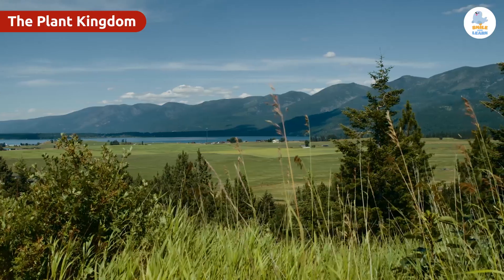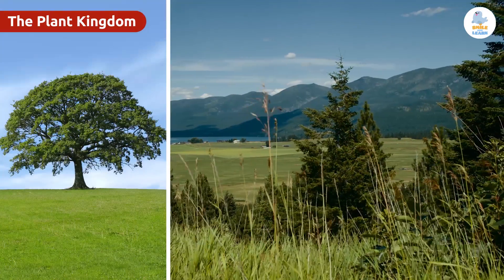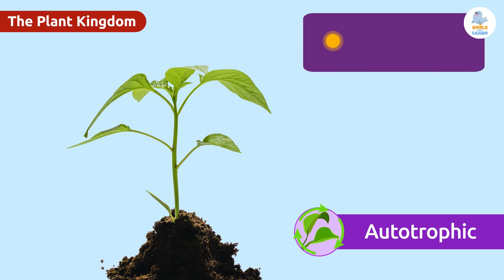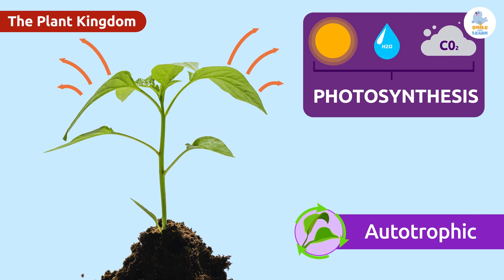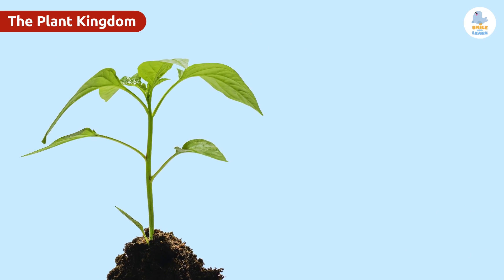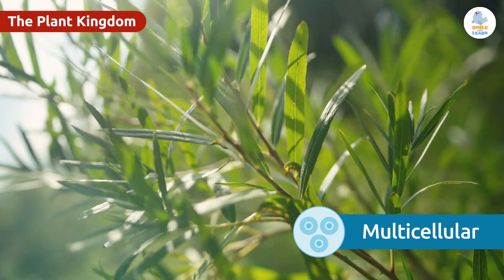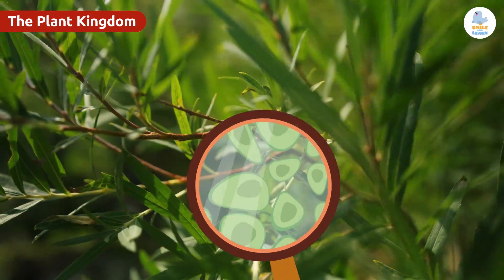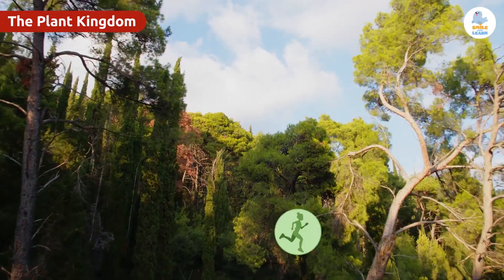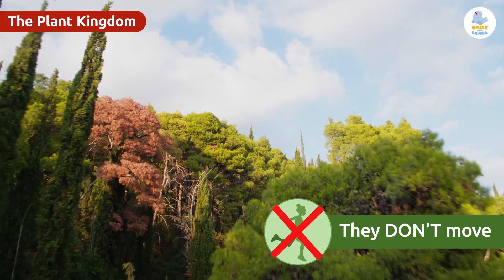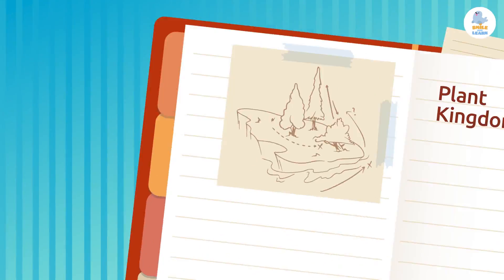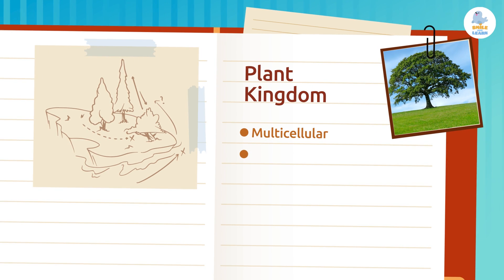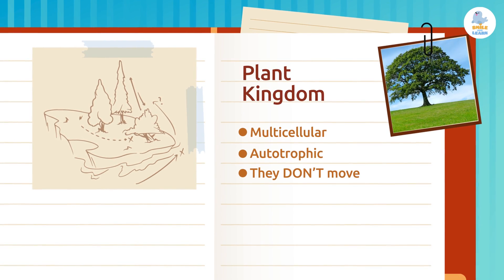The plant kingdom is characterized by the fact that all plants — whether they're trees, bushes, or flowers — are autotrophic. That means they make their own food through a process called photosynthesis. They're also multicellular, meaning they're made up of more than one cell. But unlike animals, plants cannot move on their own. So the characteristics of the plant kingdom are: multicellular, autotrophic, and they do not move on their own.